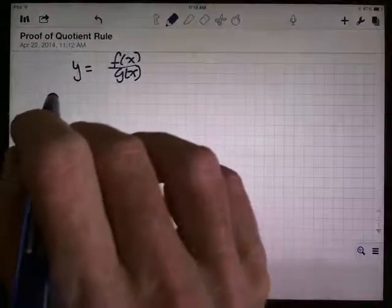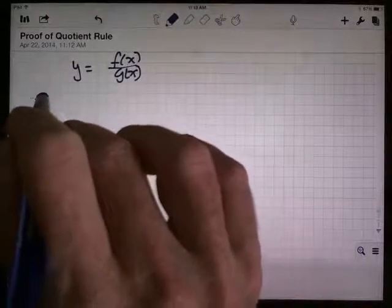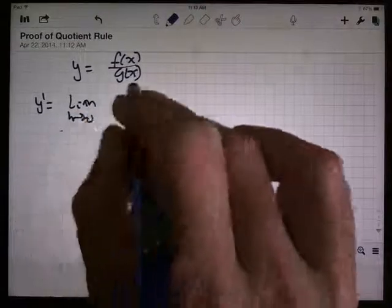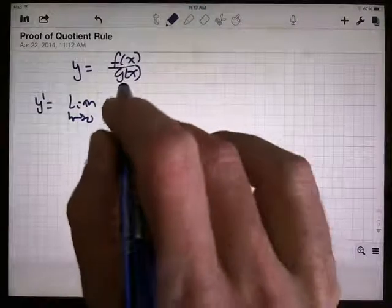I'm going to do this by the definition of derivative. So y prime is the limit as h goes to 0. I need that thing with x plus h plugged in,